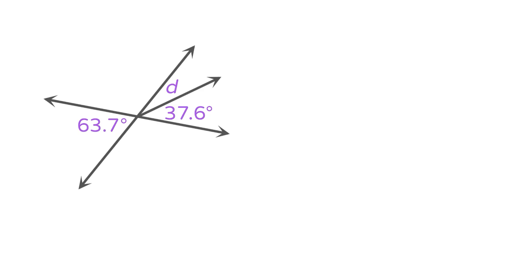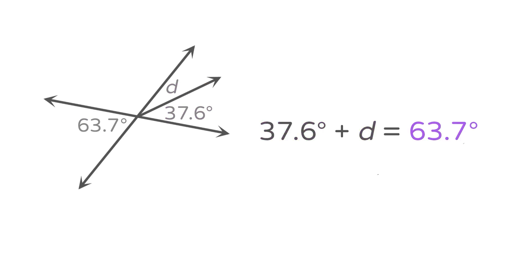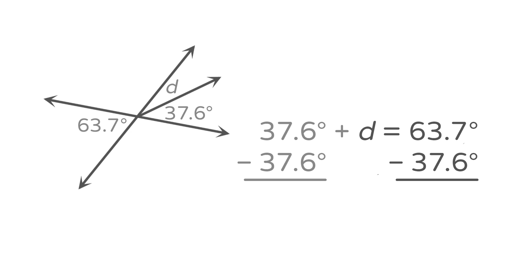There are a lot of angles here, but can we use what we know about vertical and adjacent angles to figure out the missing angle? Some of these angles are made by intersecting lines, so the angle measuring 63.7 degrees and this total angle are vertical angles. Since vertical angles are congruent, this larger angle is also 63.7 degrees. That means these two adjacent angles add to 63.7 degrees: 37.6 degrees plus d equals 63.7 degrees. Subtracting 37.6 degrees from each side, d equals 26.1 degrees.